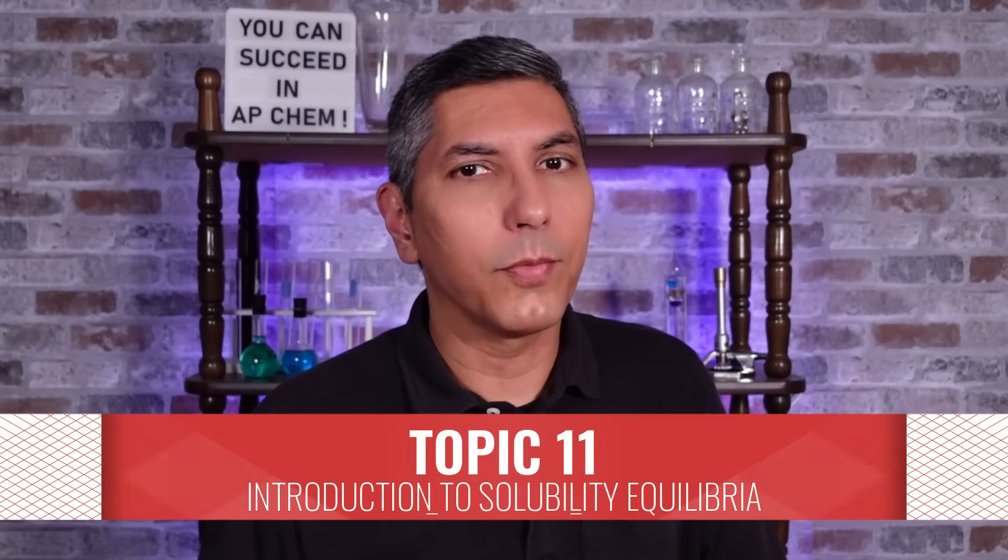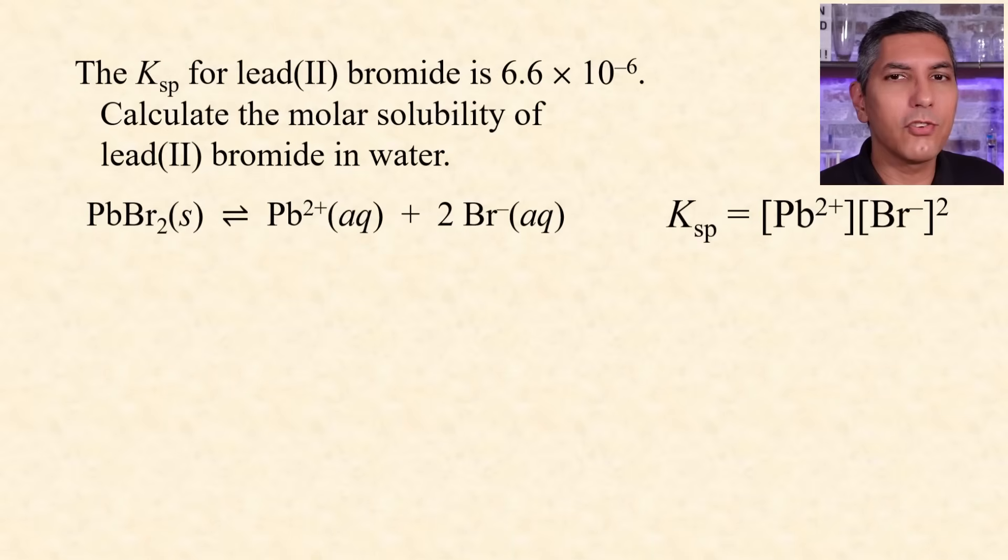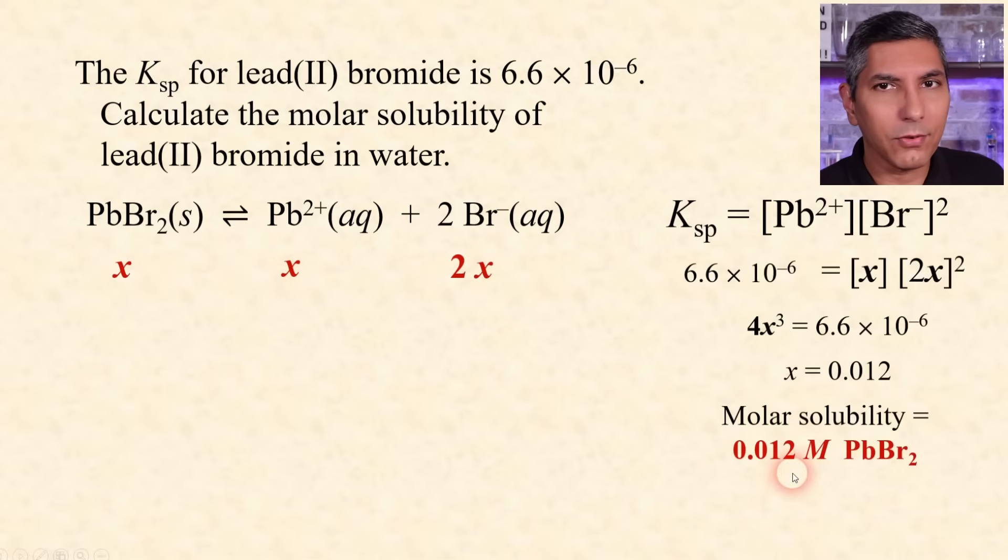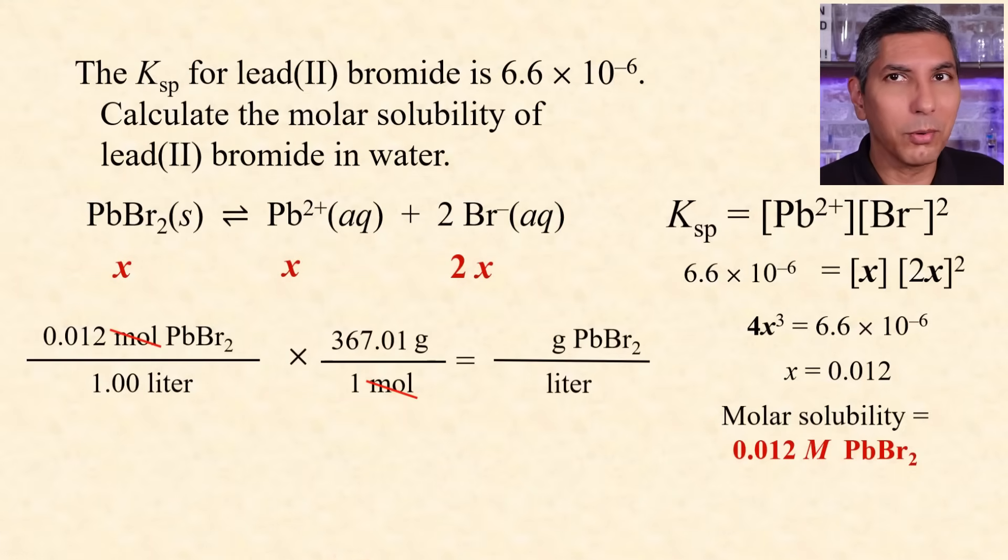An important application of equilibrium is the solubility of ionic compounds. If we write the balanced equation for the dissociation of lead two bromide, the equilibrium constant expression is what we call the Ksp, or the solubility product constant. If we're trying to find the molar solubility of this compound, well, we can call it X. The lead ion concentration would be X, and the bromide would be 2X. We can plug these values into the Ksp expression and solve for X. So, we see the molar solubility of lead two bromide is 0.012 moles per liter. We can convert that to grams per liter, if we wish, with a simple mole to gram conversion.